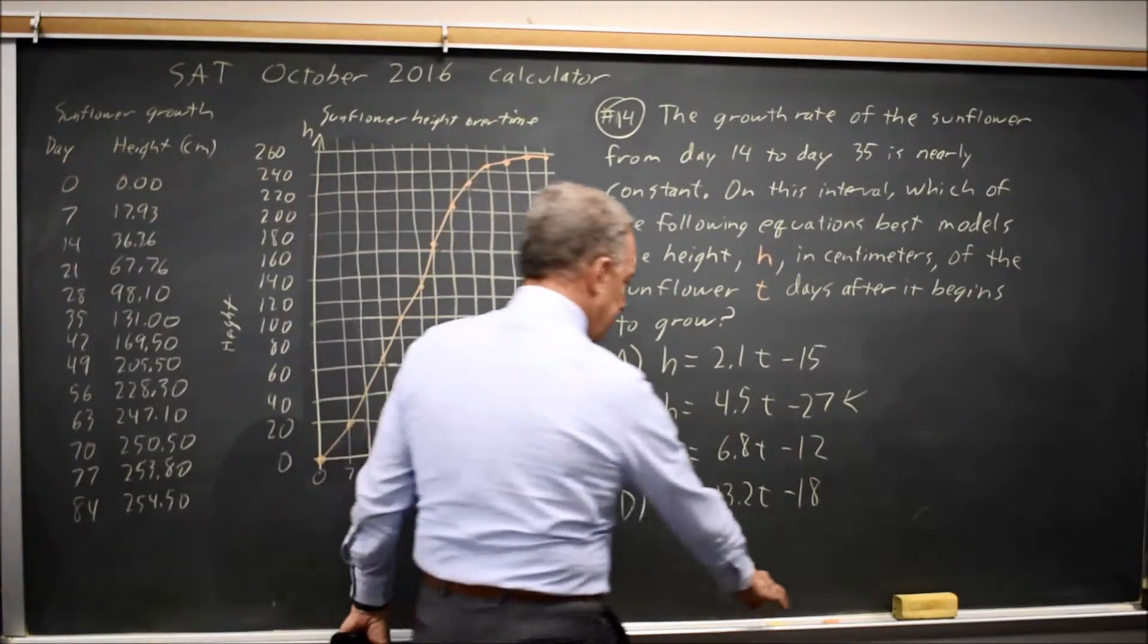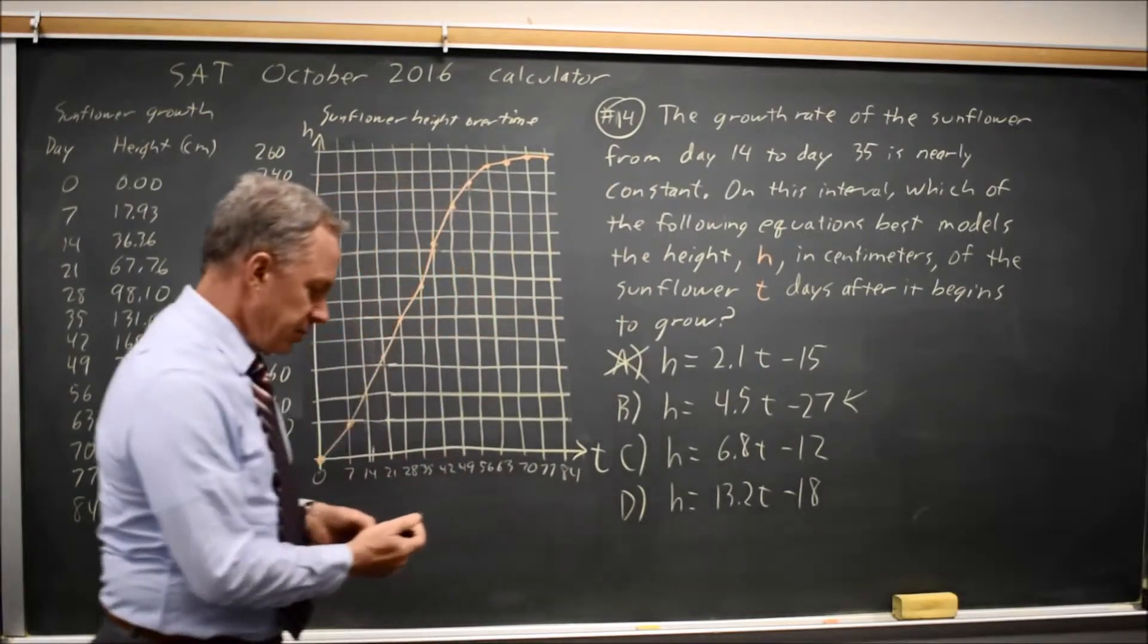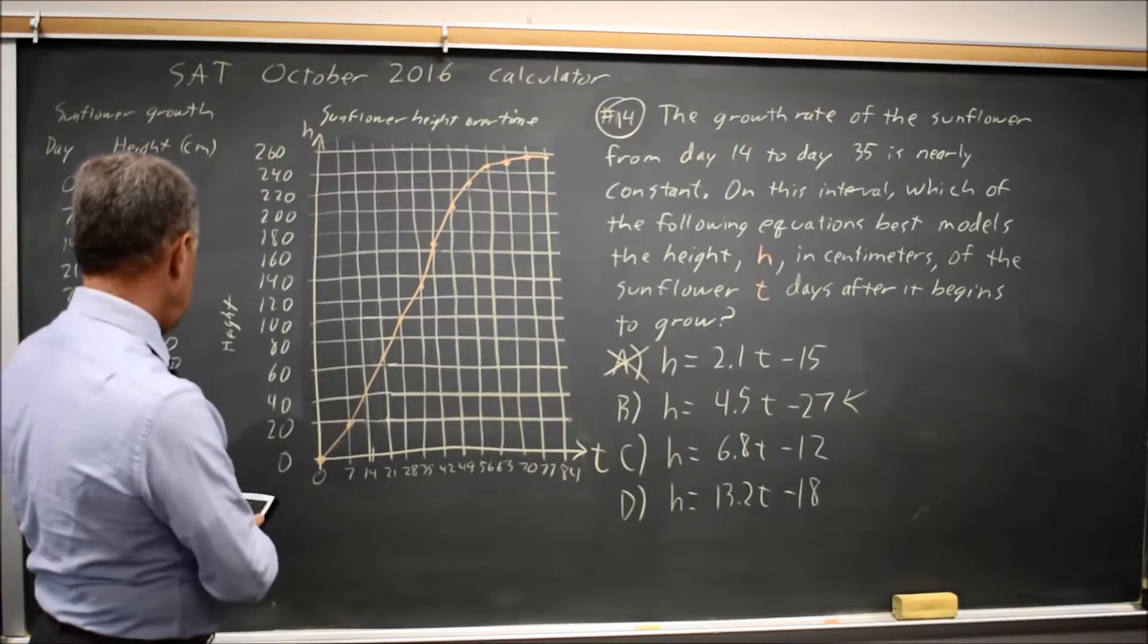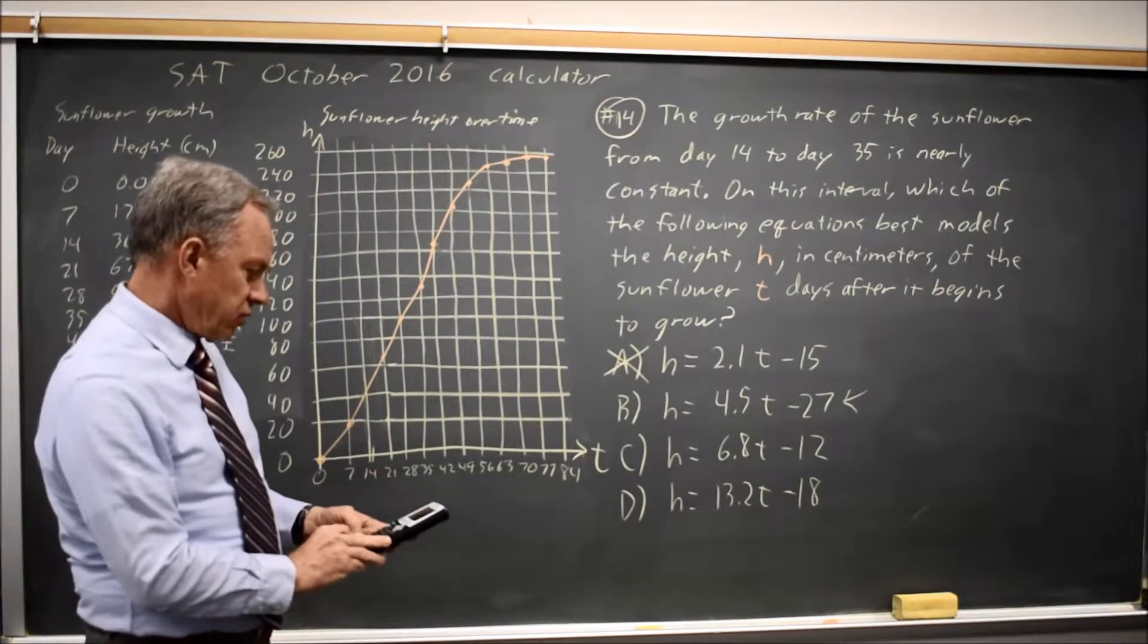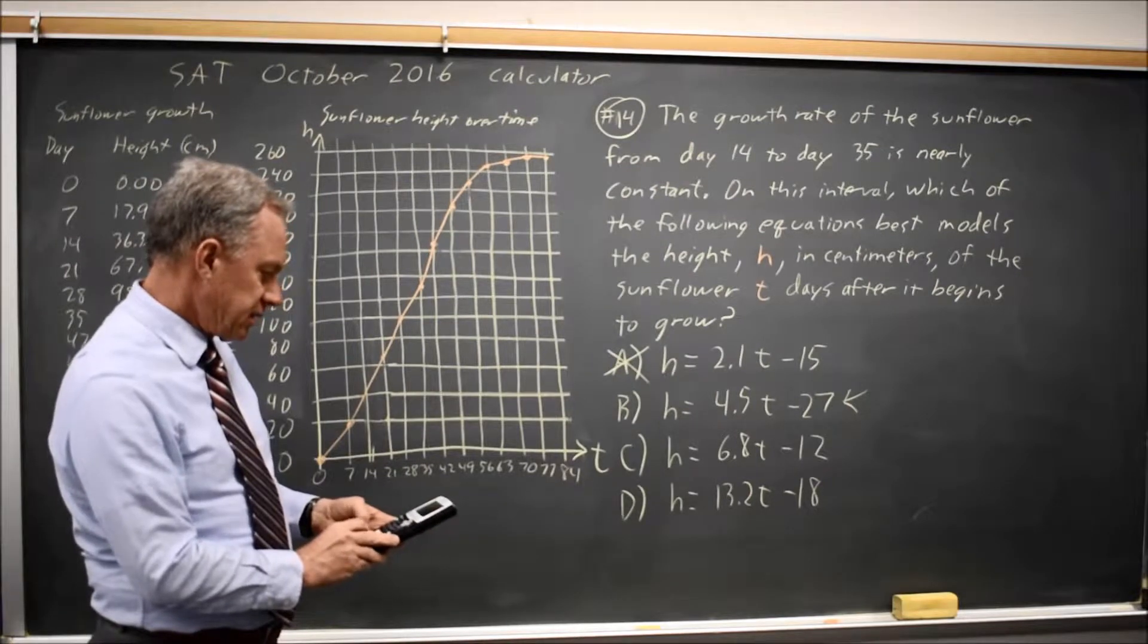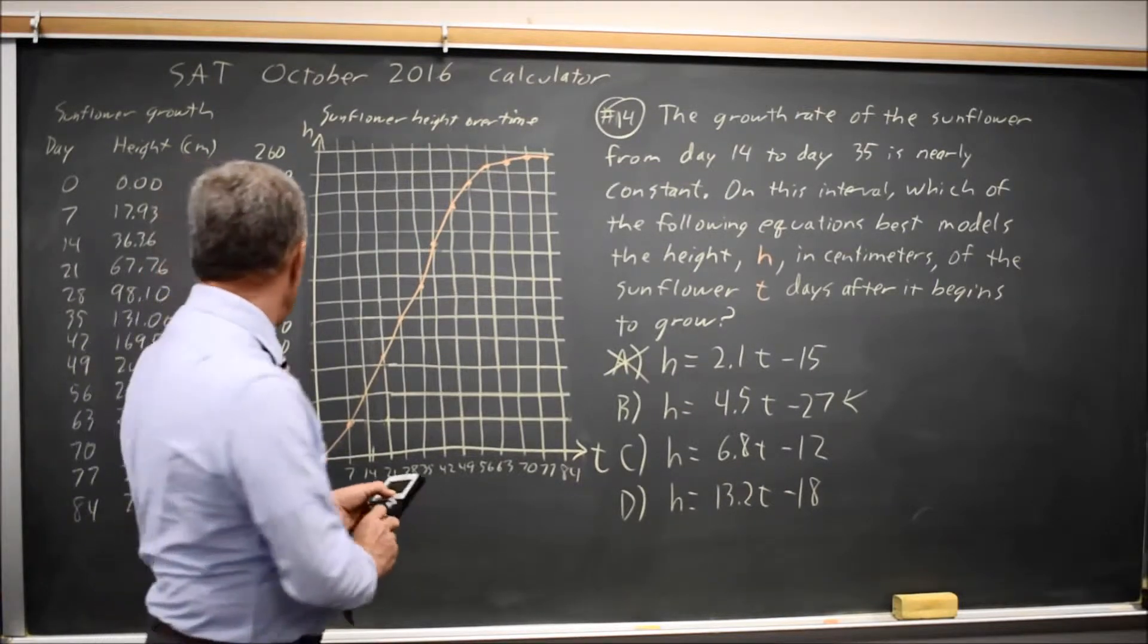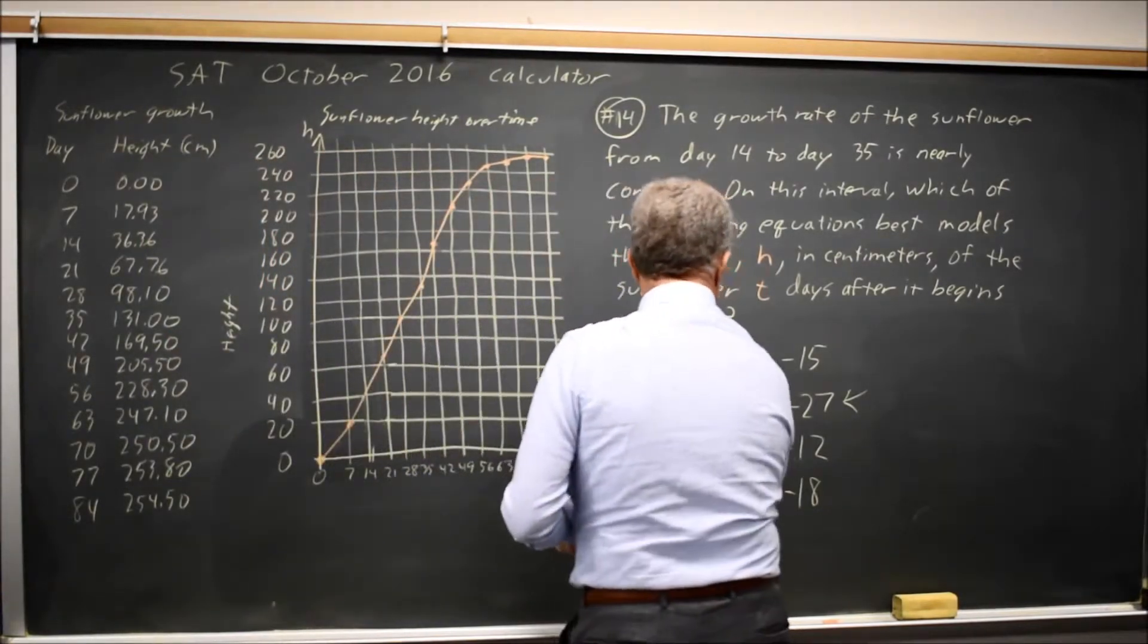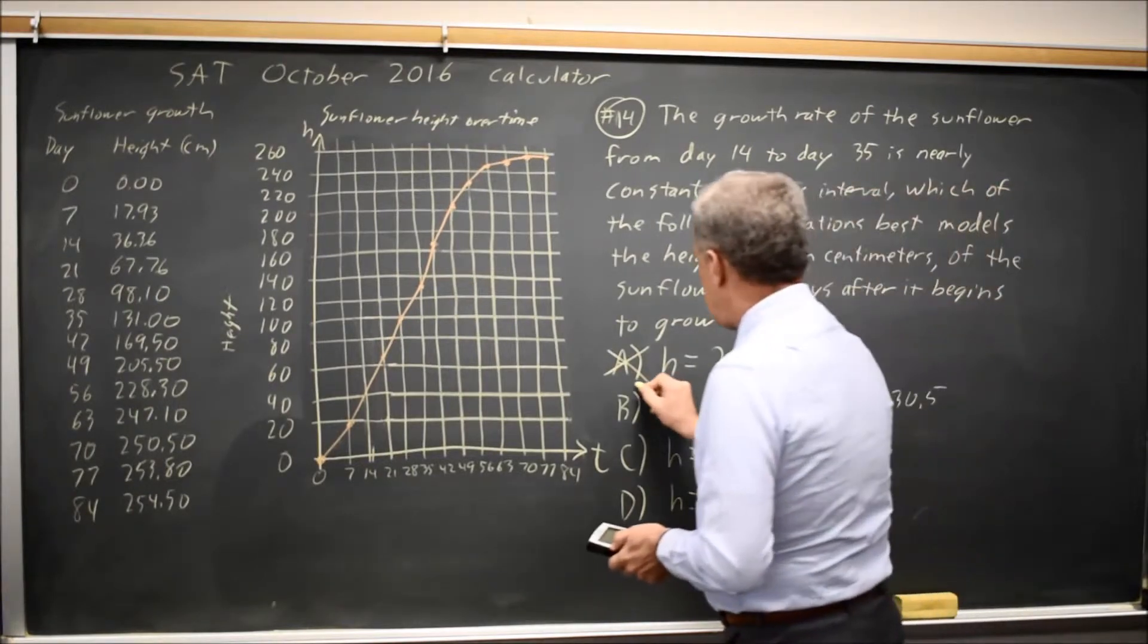So choice A is clearly very wrong. Choice B gives me, 4.5 times 35 minus 27 gives me 130.5, which is within a half inch. And that's close enough.